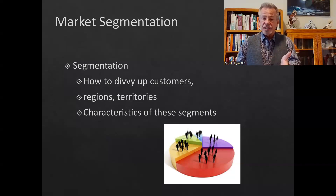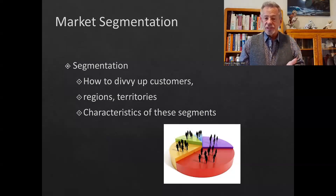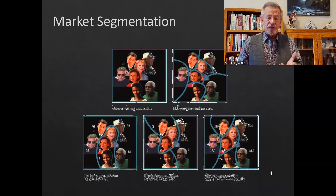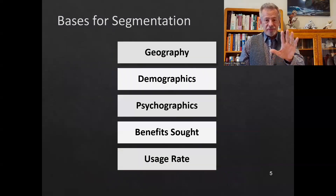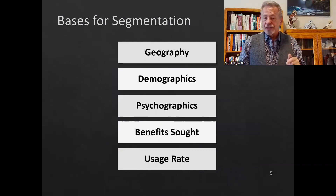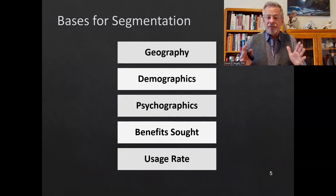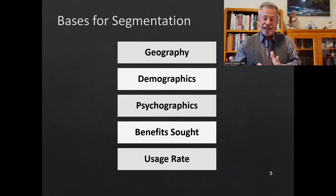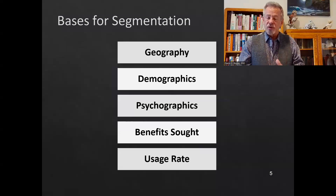You want to divide up the customers by regions and characteristics of the different segments you're looking at. You want to look at how people dress, how they think, how they respond, how they do different things. Geography plays a big role. You have different markets on the East and West Coast, different markets on the coast versus the center of the United States, and a very different market if you're trying to sell products in China or India.